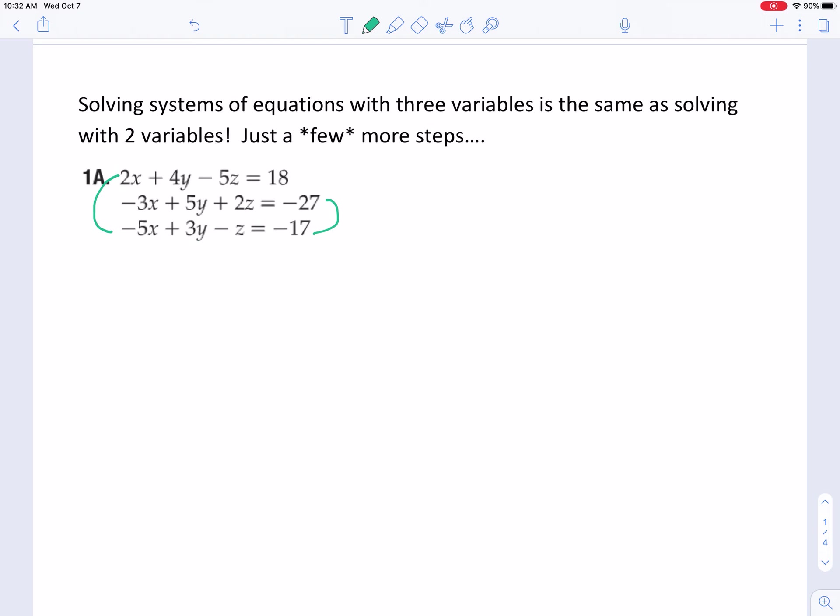So for the first one, I'm going to multiply the bottom one by 5, because if I multiply the bottom one by 5, that will give me negative 25x plus 15y minus 5z equals 5 times negative 17, which is negative 85. So then if I bring down the top one exactly as I saw it, I think I'm really close to getting my z's to cancel.